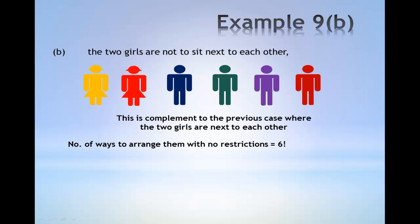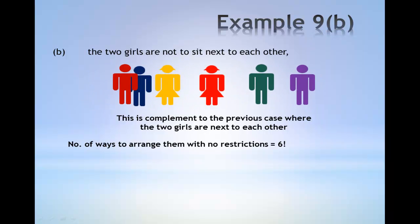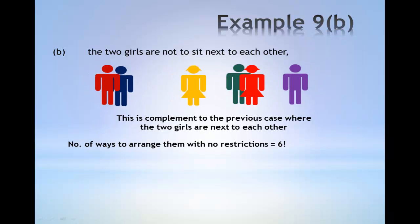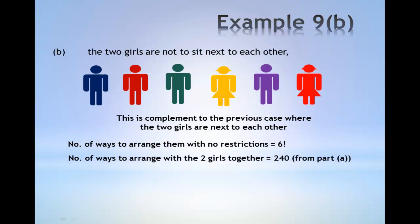The number of ways to arrange them with no restrictions is six factorial. The number of ways to arrange with the two girls together is 240, which is obtained from part A. By the complementary principle, the total number of ways of arranging the two girls not sitting next to each other is given by six factorial minus 240, which gives 480.